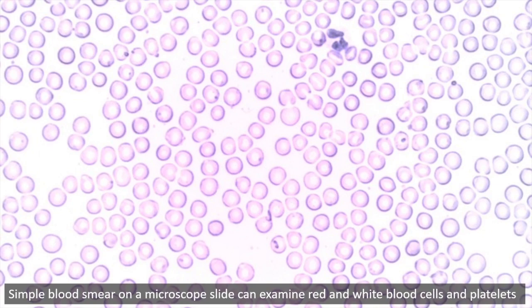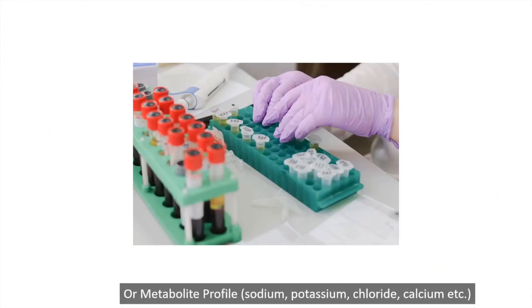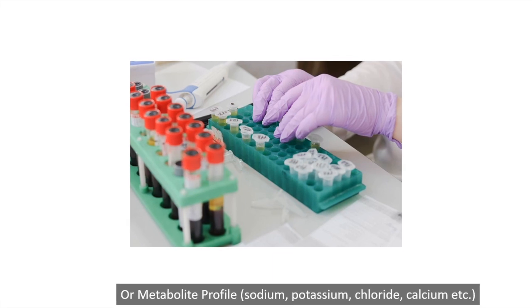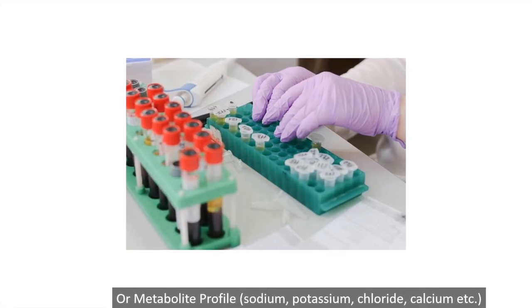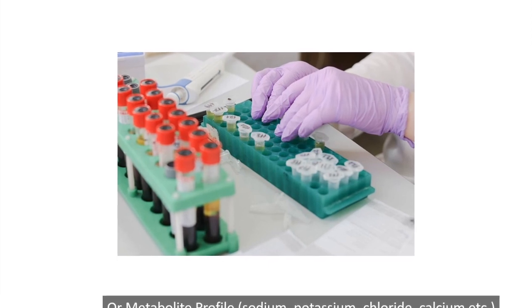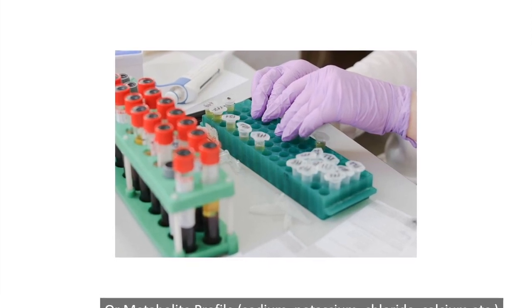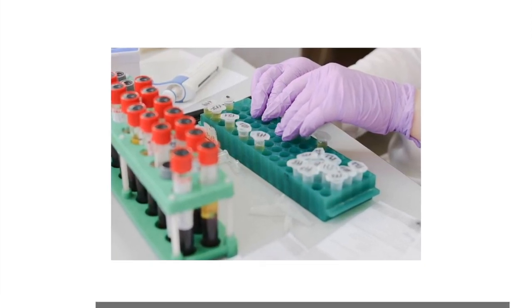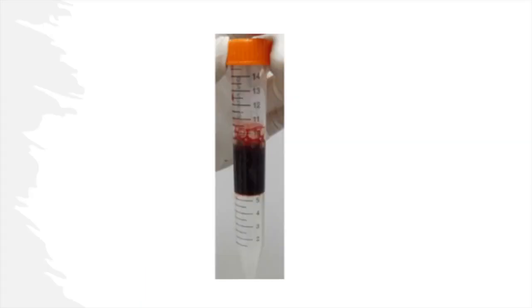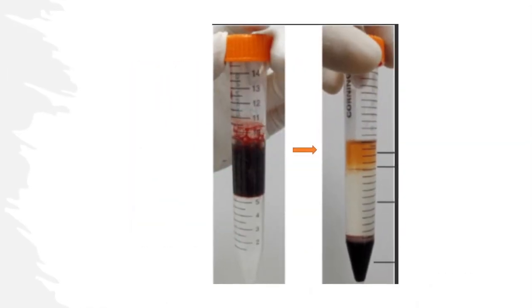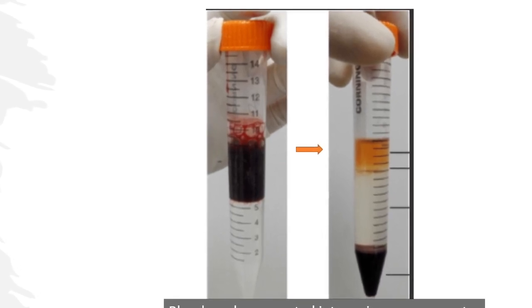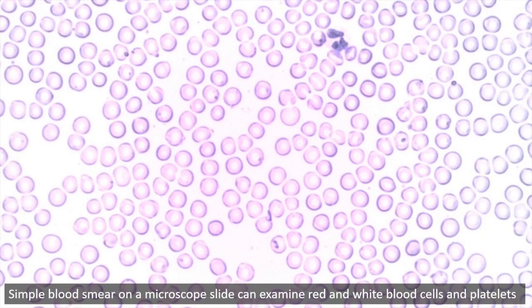Or they may request a basic metabolite profile, which involves measuring sodium, potassium, chloride, calcium, bicarbonate, blood urea nitrogen, creatinine, and glucose levels, if they want to determine the present state of renal function. Depending on the required test, blood can be separated into different components.